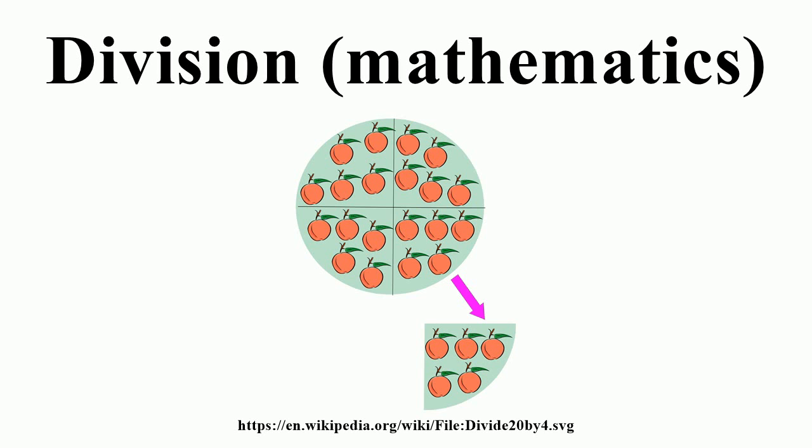Partitioning involves taking a set of size a and forming b groups that are equal in size. The size of each group formed, c, is the quotient of a and b.